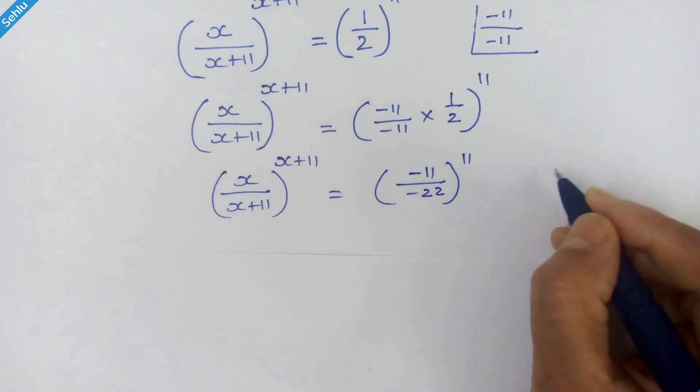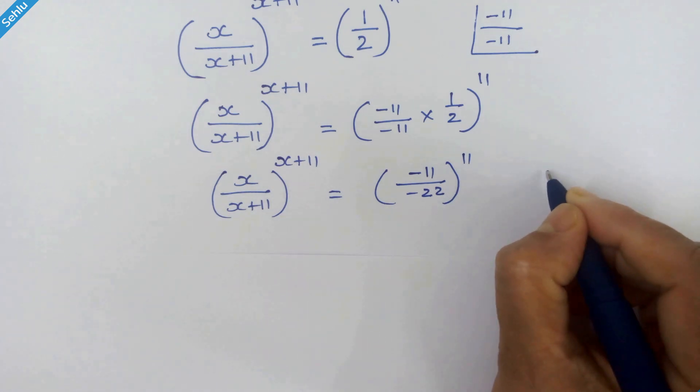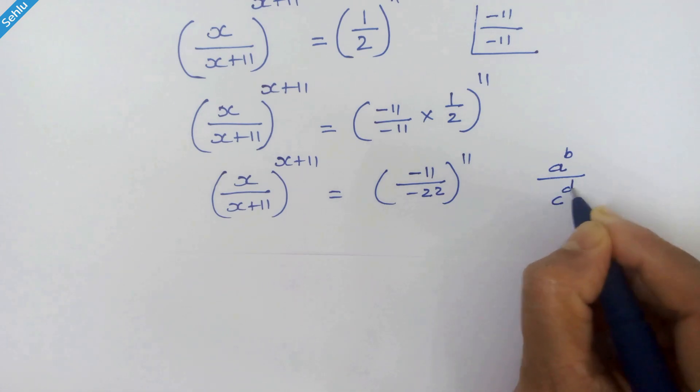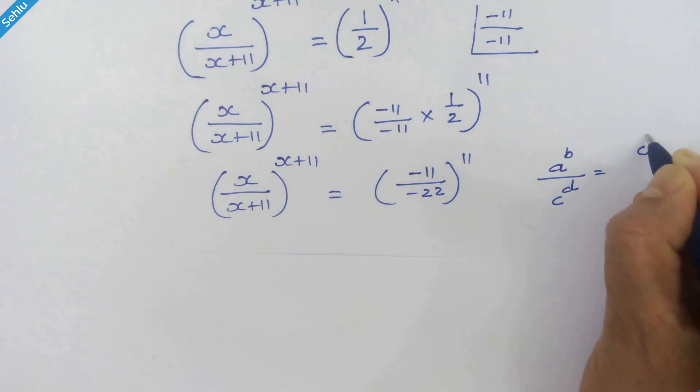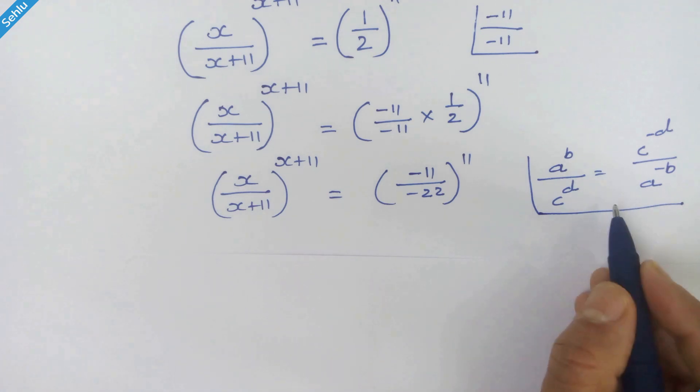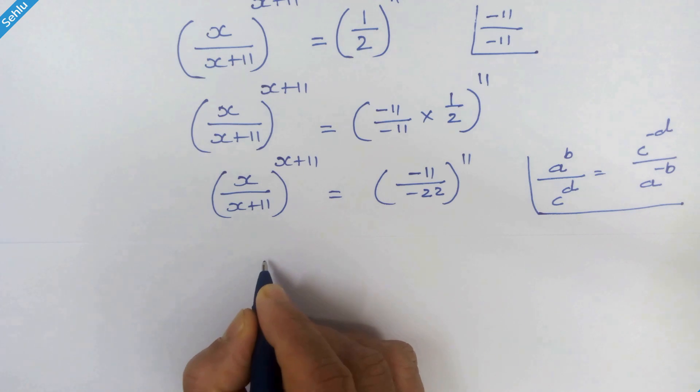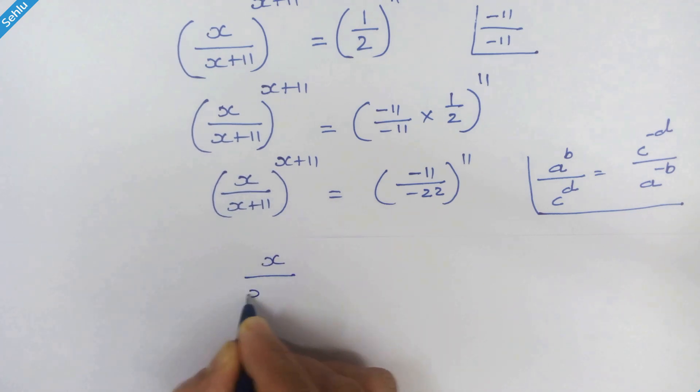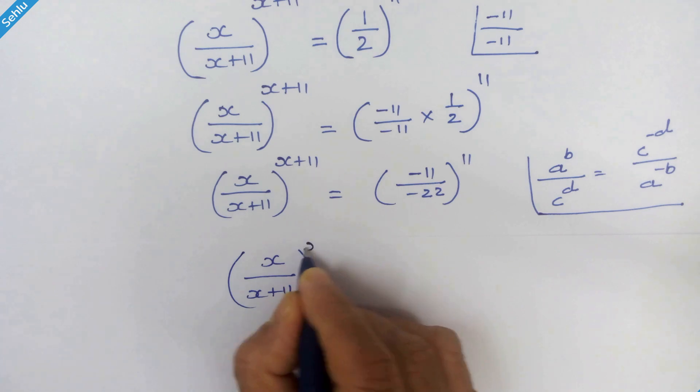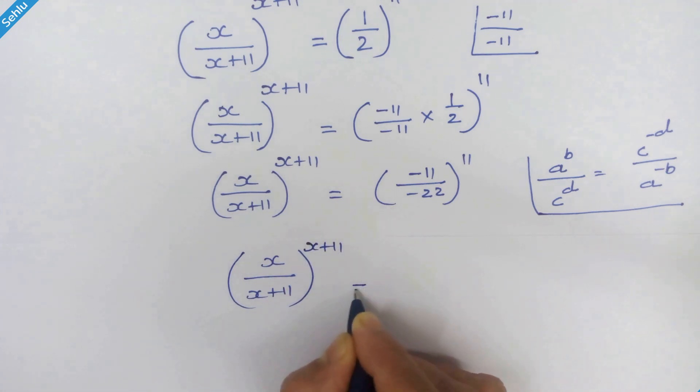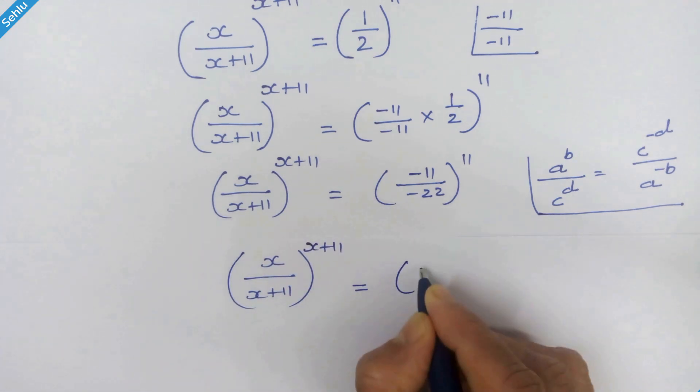Now please check this rule where a raise to b upon c raise to b upon c raise to d then it will be c raise to minus d upon a raise to minus b. So if we apply this rule on right hand side we have x upon x plus 11 whole raise to x plus 11 is equal to minus 22 upon minus 11.